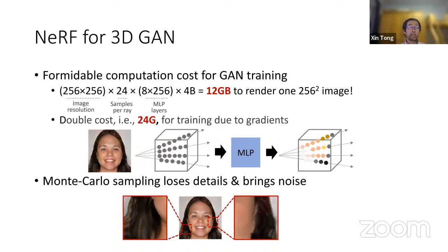To train a GAN that can render 256×256 images, we require about 24 gigabytes of memory and many sampling points. For discriminators, we need to render the whole image, whereas for NeRF reconstruction tasks we only need to render a subset of pixels for L2 comparison — so we need more rays and thus more memory and computation. Additionally, NeRF rendering uses Monte Carlo sampling with random sampling patterns along each ray, which results in detail loss and noise in the results.